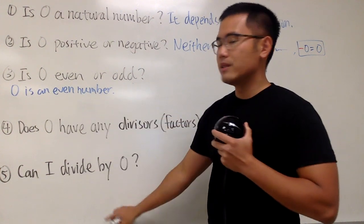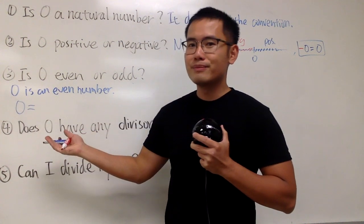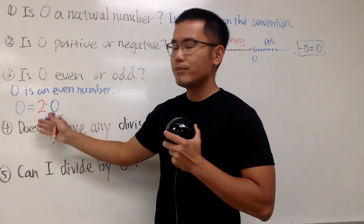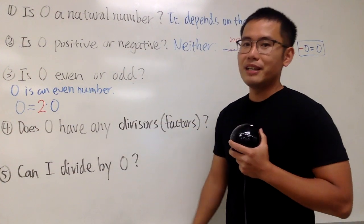In that case, can we write zero as 2 times something? Yes, because we know 2 times 0 is equal to 0, so 0 is even. That's it.